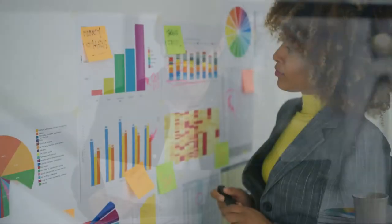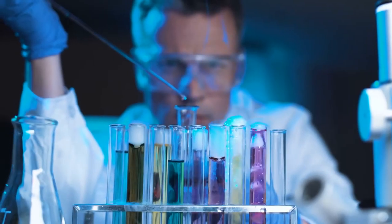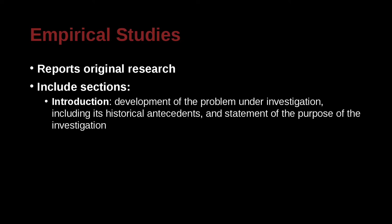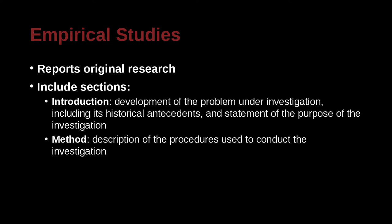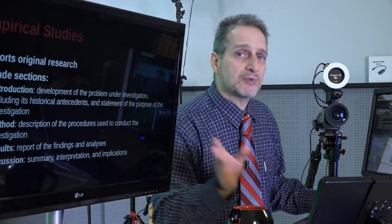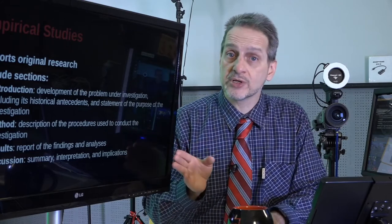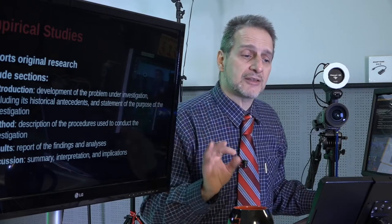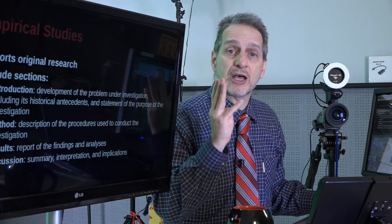Empirical means that you're doing some kind of original research. You're actually looking at source material, doing some kind of test, a survey, or some kind of experimentation in a lab. If you do an empirical study, the parts of your thesis or research paper would include an introduction, a methodology section, a results section, and a discussion section — four main sections.